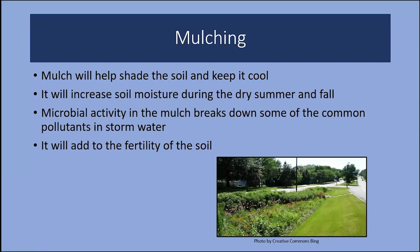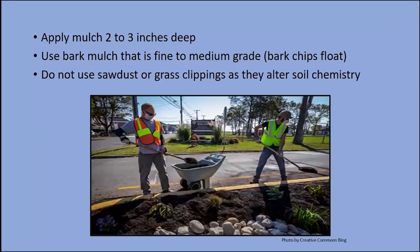Mulch is important to the success of your rain garden. It will shade the soil and keep it cool, increase soil moisture during dry summer and fall, and microbial activity in the mulch will help break down common pollutants found in stormwater. The recommended bark is fine to medium grade — not chips, because they float. Mulch should be applied two to three inches deep, and you may wish to continue mulching each year. Do not use sawdust or grass clippings, as they will alter soil chemistry and may affect plant performance.